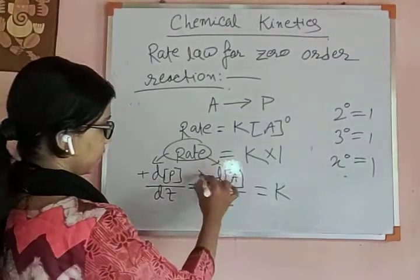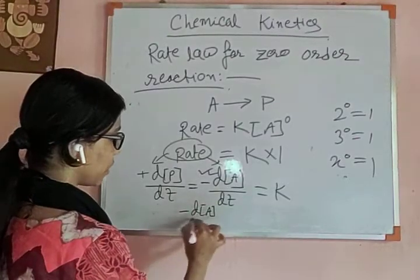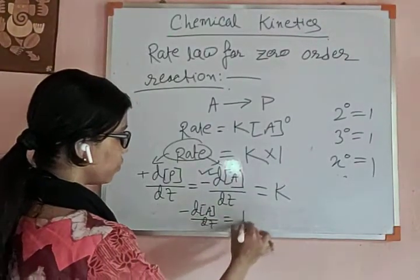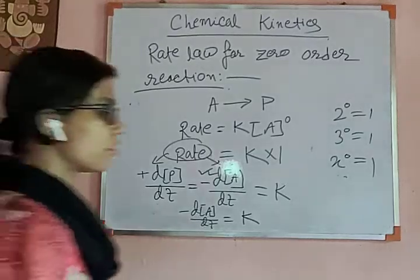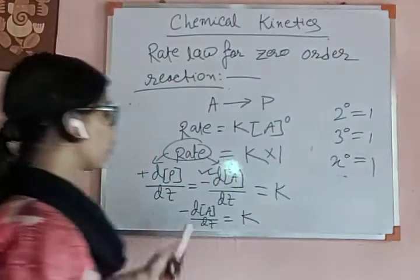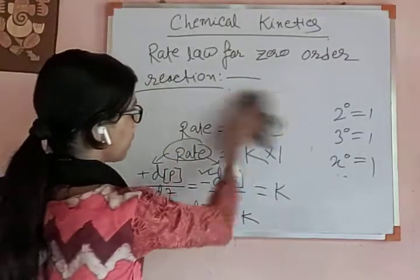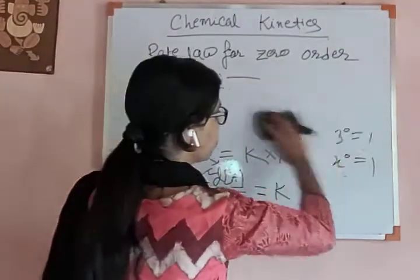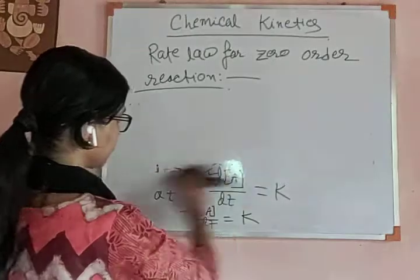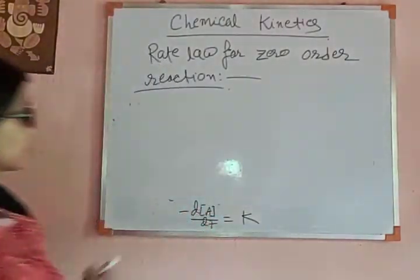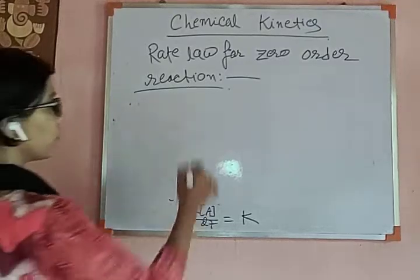Taking this reactant, minus D[A]/DT equals K. Reactant concentration decreases with time, that is why the minus sign is given here — the reactant concentration is decreasing with the progress of the reaction. So minus D[A]/DT equals K, therefore D[A] equals K into DT.